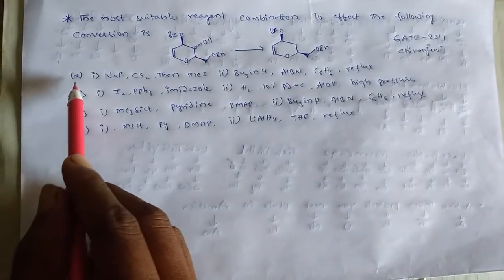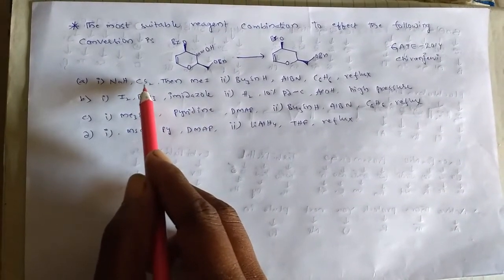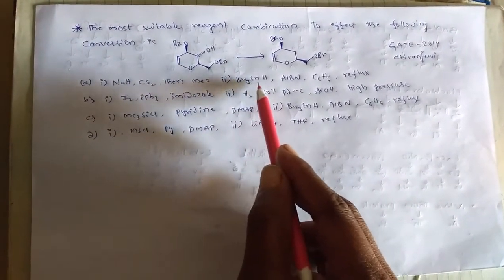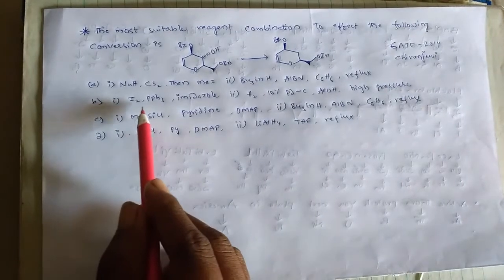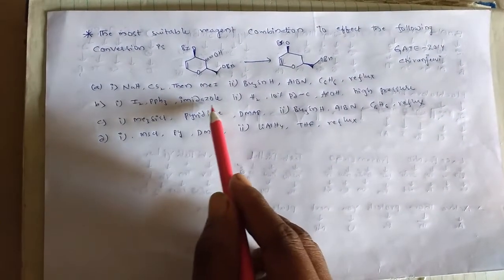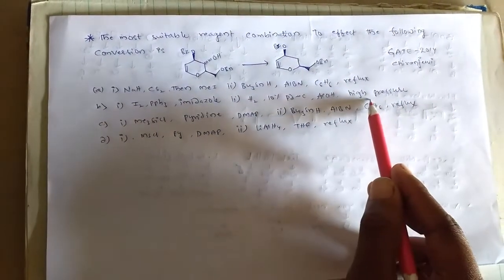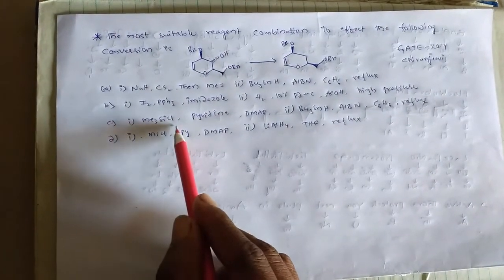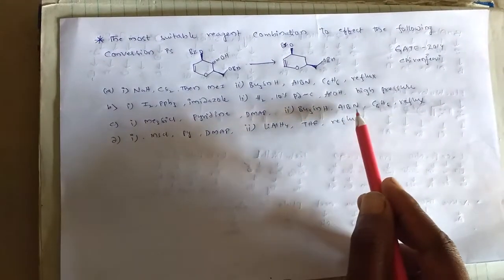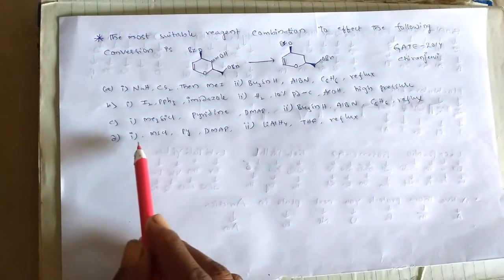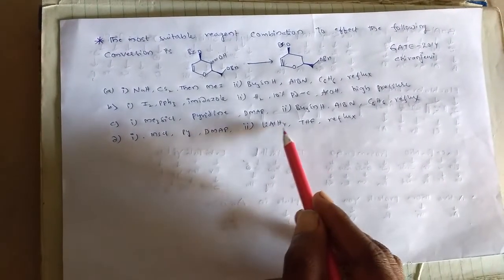We have four options. Option A: first reagent sodium hydride and carbon disulfide, then methyl iodide. Option B: first one iodine and triphenylphosphine imidazole, second hydrogen 10% palladium on carbon, acetic acid, high pressure. Option C: first one trimethylsilyl chloride, pyridine, DMAP, second tributyltin hydride, AIBN, benzene and reflux. Option D: mesityl chloride, pyridine, DMAP, and second one lithium aluminum hydride, tetrahydrofuran, reflux.